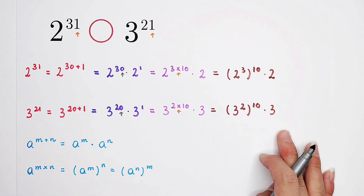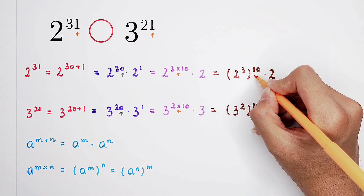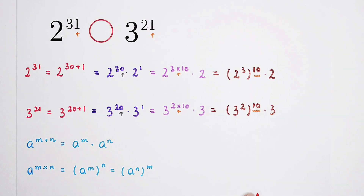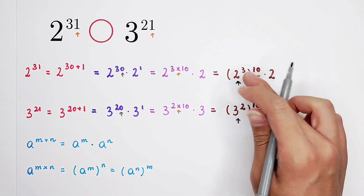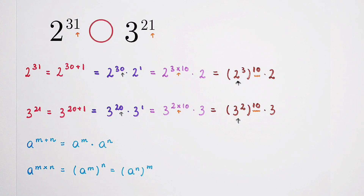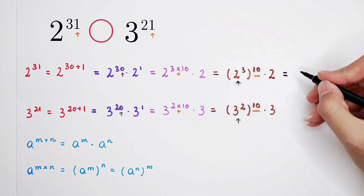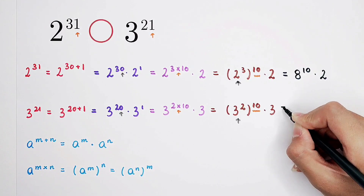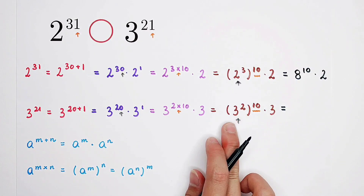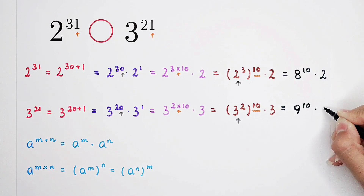Now our work is to evaluate the two bases. 2 to the power of 3 is 2 times 2 times 2, which is 8. So we have 8 to the power of 10, and then times 2. And 3 to the power of 2 is 3 times 3, which is 9. So we have 9 to the power of 10, and then times 3.